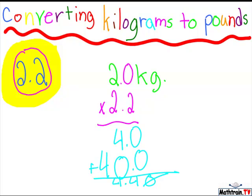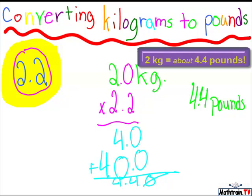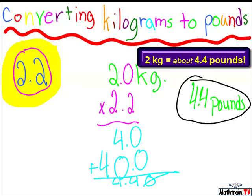So, now we know that it's roughly about 4.4 pounds. So, 2 kilograms equals roughly about 4.4 pounds. Thanks for watching. John.